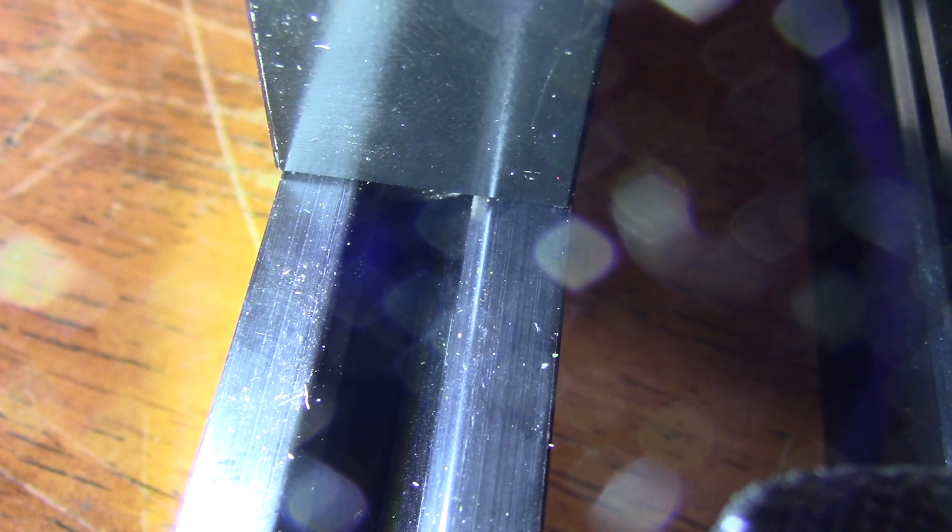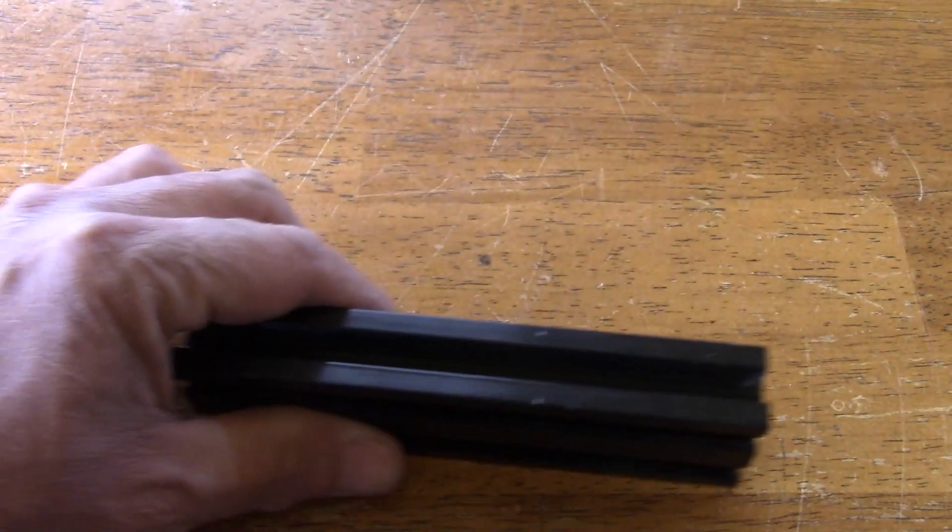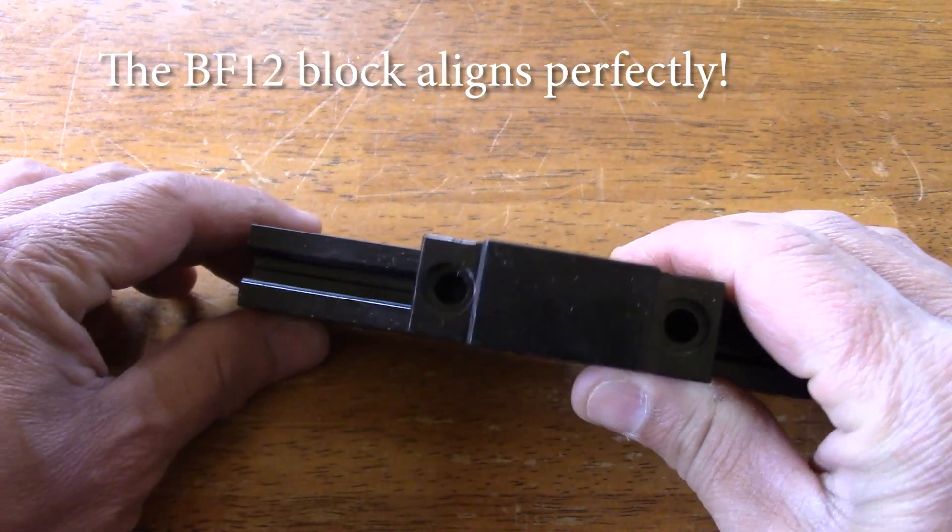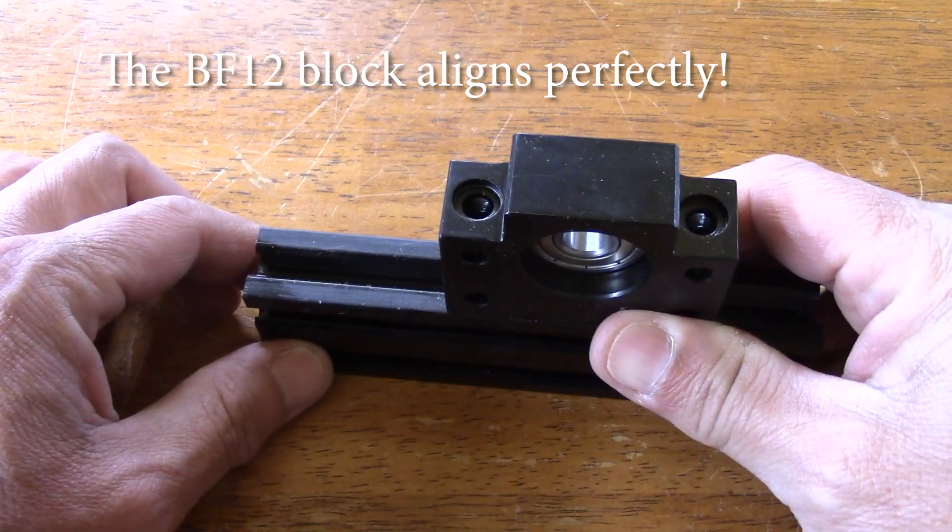Do not tighten yet though, as we need to calibrate the axis at a later time. How about the BK12 block? Here is where the extrusion failed to provide.